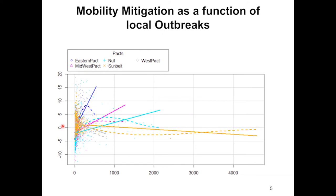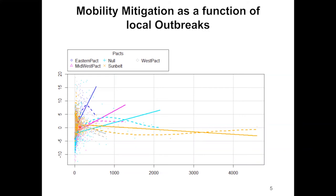The Sunbelt states, which were also unaffiliated, did not go out as much as the Midwestern PACs. However, how did that compare to local infection rates? If we plot our data — the movement data as a function of local infection rates — we see a huge increase in social distancing in the Eastern PAC states compared to the Sunbelt states. Even though the Sunbelt did stay at home somewhat, it was not as much as it would be as a response to local COVID-19 infection rates.